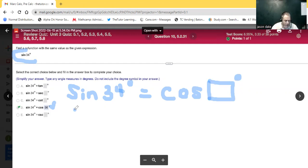So sine 34 equals... We have to go to a right angle, which is going to be 90 degrees. So cosine 90 degrees minus the 34.